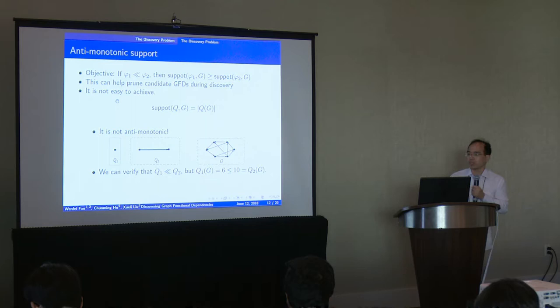Consider the following example. Q1 is one point and Q2 consists of two points. We can verify that Q1 is smaller than Q2, but the support of Q1 is also smaller than Q2, the support of Q2. So it is not anti-monotonic. So we define the support of GFD to be the number of matches of key nodes in the graph.